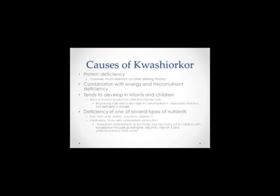Causes of Kwashiorkor: protein deficiency is the main cause, but there is also research explaining that a combination of energy and micronutrient deficiency plays a role. This disease tends to develop after a mother weans her child from breast milk, replacing it with a diet high in carbohydrates, especially starches, but deficient in protein. There is also a deficiency of several micronutrients including iron, folic acid, iodine, selenium, and vitamin C.